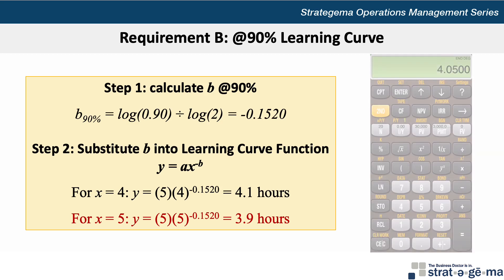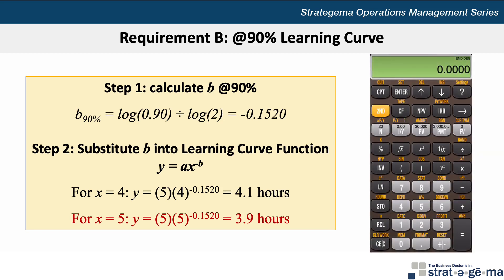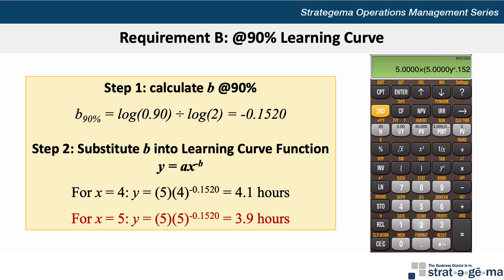The fifth installation is 3.91 hours, calculated as 5 times 5 to the exponent negative 0.1520. Using the calculator without recalling: 5 times, open parenthesis, 5, yx, 0.1520, plus-minus button, close parenthesis, equals.